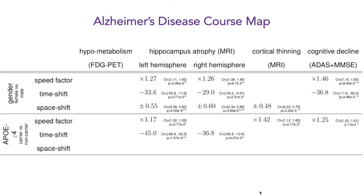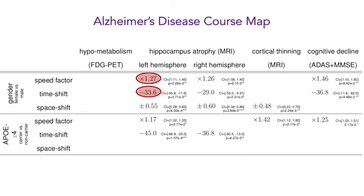The same results were computed for the Alzheimer's disease course map, where we looked at how gender and the APOE mutation affect the acceleration factor, the time shift, and the inter-marker spacing depending on the modality. For example, it indicates that females progress 1.27 times faster than males in the thinning of the left hemisphere hippocampus, and this thinning starts 33.6 months earlier for females than males. It also shows that cognitive decline is 1.46 times faster for females than males and starts 36.8 months earlier.